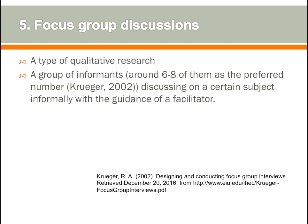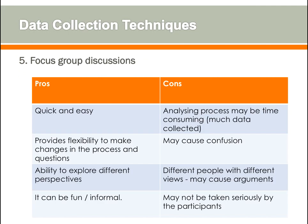Focus group discussion is a technique used in qualitative research in which a group of around six to eight informants discuss a subject matter informally with the guidance of a facilitator. The pros are that it is quicker and easy to conduct, provides flexibility to make changes during the process, and allows exploration of different perspectives in a fun and informal way. The cons are that analysis can be time-consuming due to the volume of data, it may cause confusion with differing views, may lead to arguments, and may not be taken seriously by participants.